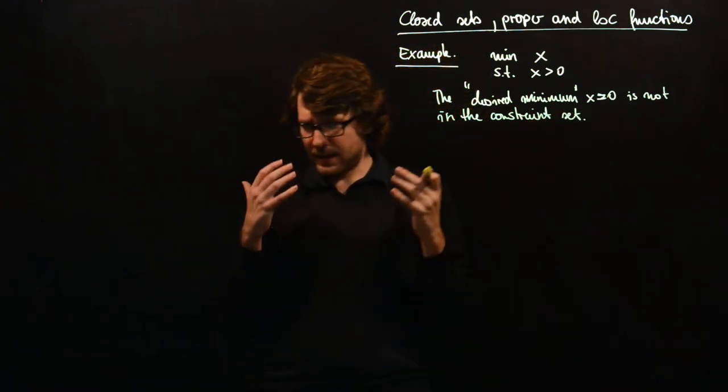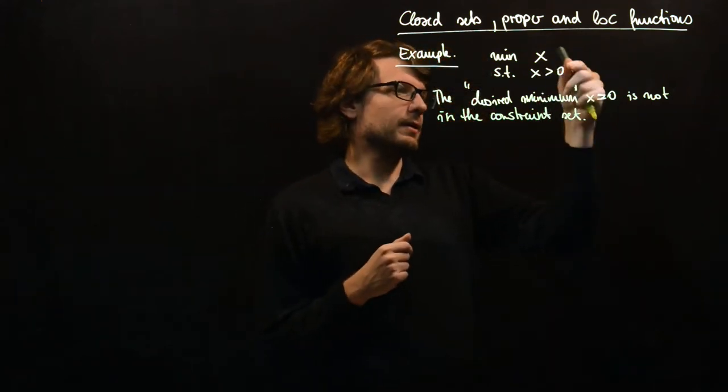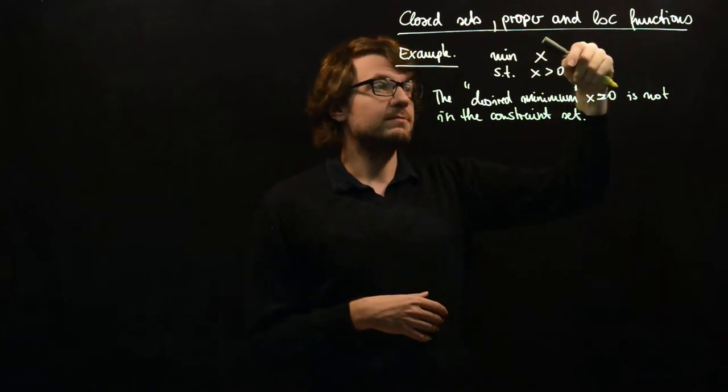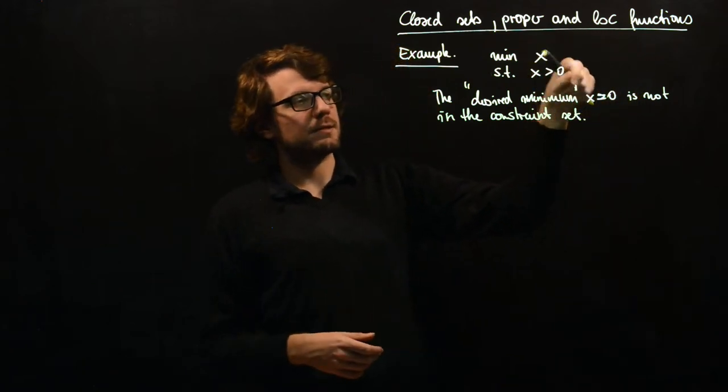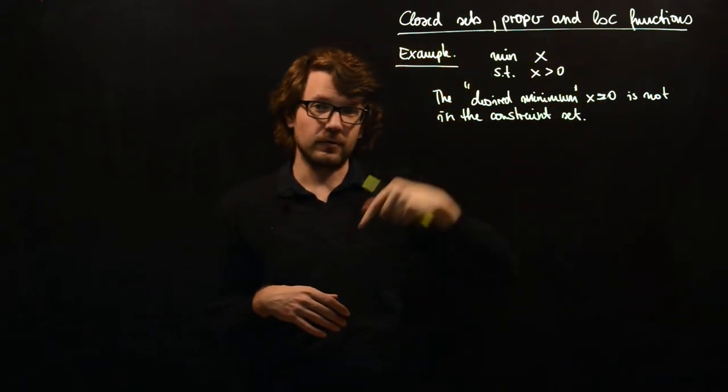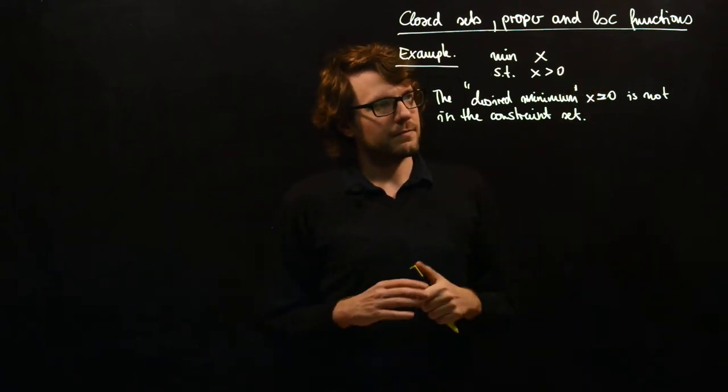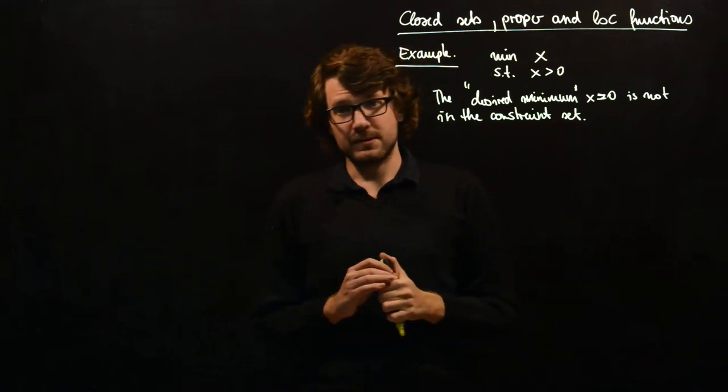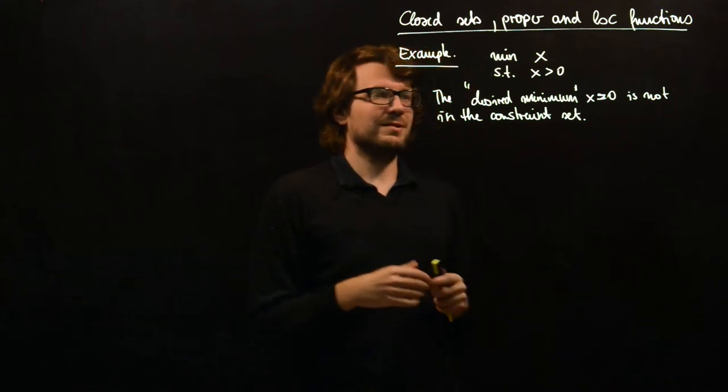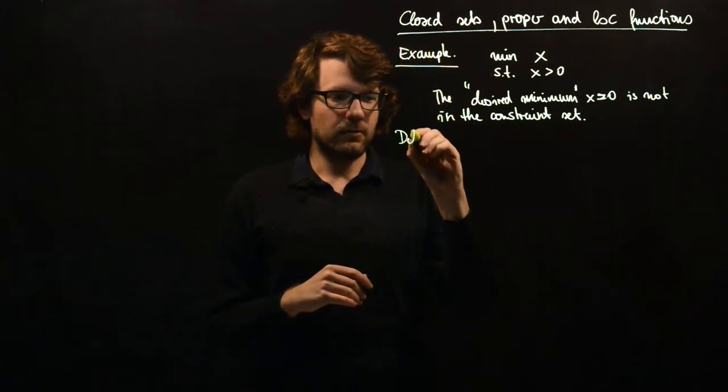That's a problem because our algorithm will typically begin with some positive value of x as an approximation, and then it will converge to zero because it sees that the function is falling towards zero. But the limit point x equals zero is not a solution of our problem because it's not in the feasible set of the problem. We want to exclude this usually by the following assumption.